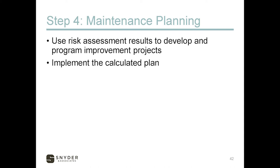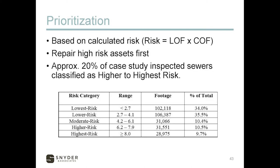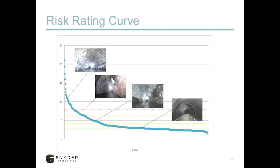Maintenance planning is the next step. We have the risk assessment where we've identified the potentially highest-risk segments, and so we're going to develop a program that addresses those using that risk information. This will be based on the calculated risk — the product of the likelihood of failure and the consequence of failure — with the high-risk assets addressed and repaired first. In our case study, about 20% of the inspected sewers were classified as higher to highest risk.